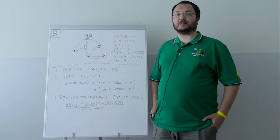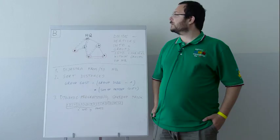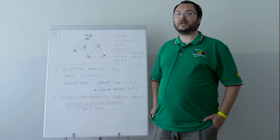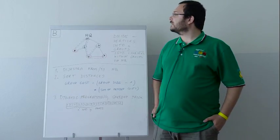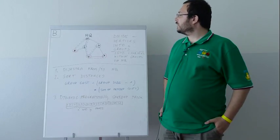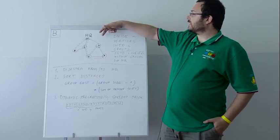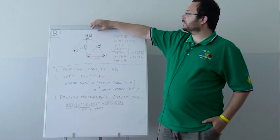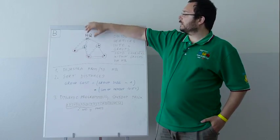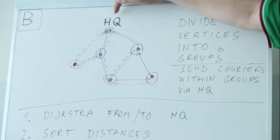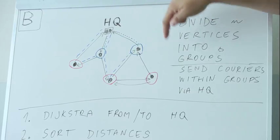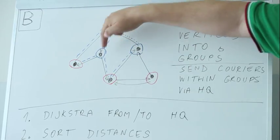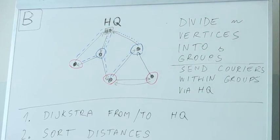Hello everyone, I'm Mikhail Forishek. I will be presenting problem B of these World Finals. Problem B starts as a graph problem. We are given a graph that represents the position of the headquarters, and there are n different vertices which represent some branches of a company.